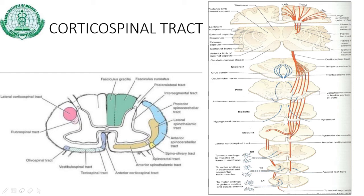In the lower medulla, 75% of the fibers cross to the opposite side and descend in the lateral funiculus of the spinal cord as the lateral corticospinal tract. About 20% of the fibers are uncrossed and descend to form the anterior corticospinal tract. The remaining 5% pass through the lateral corticospinal tract of the same side. The anterior corticospinal tract travels to the appropriate level of the spinal cord and then crosses to the opposite side.